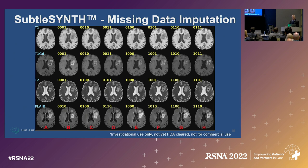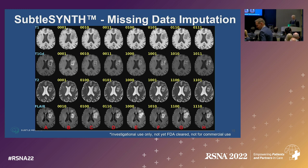I think this is one of the future aims — not just for producing gadolinium images from non-gadolinium images, but for any case in which a sequence didn't go as planned, which happens not infrequently.